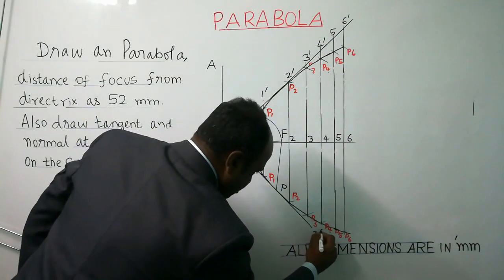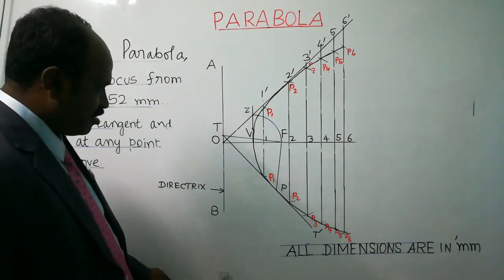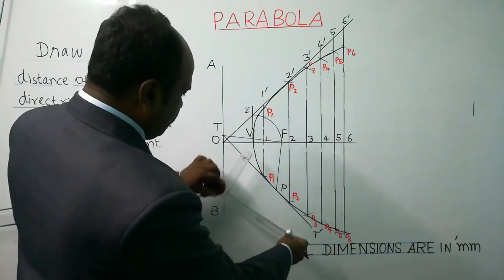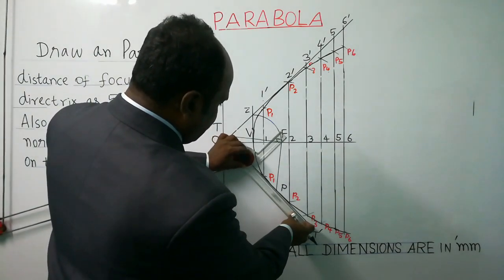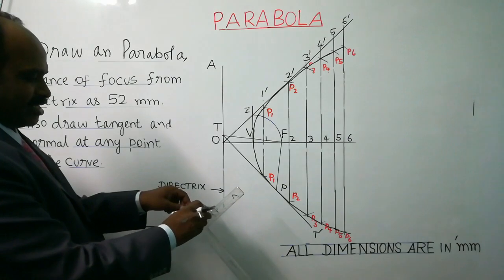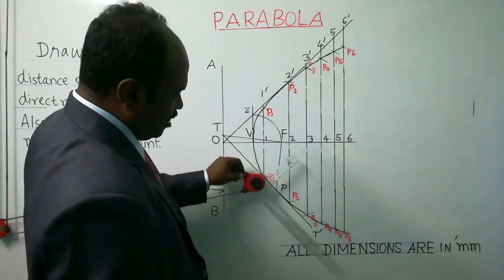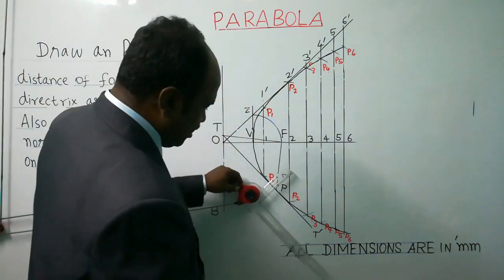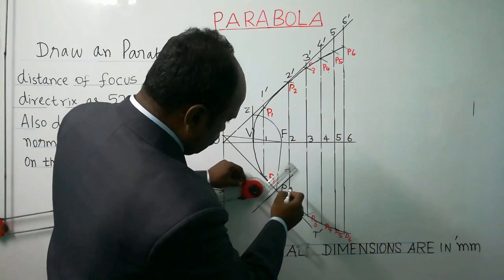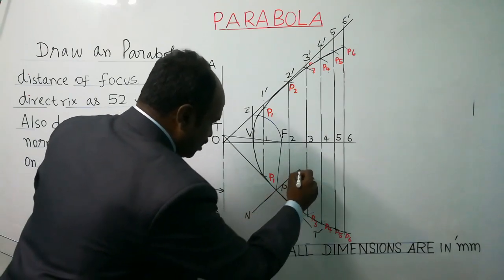To draw the normal, take the drafter scale and keep its edge in coincidence with the TT dash line. Tie the drafter scale, then using another scale of your drafter in the same setting, draw a line perpendicular to TT dash passing through point P. This is called the normal, marked as N and N dash.